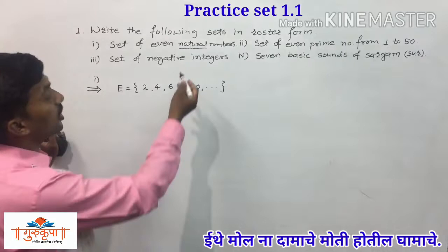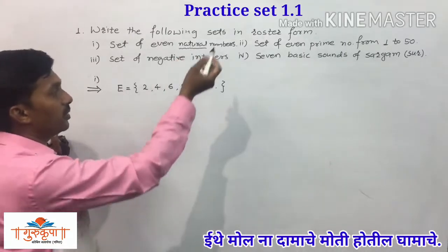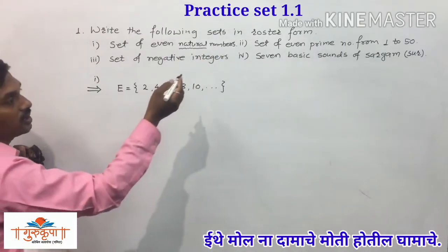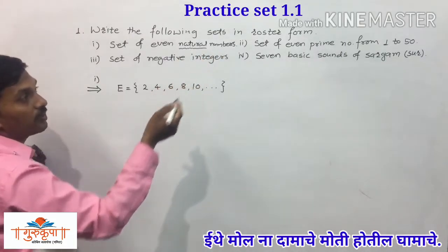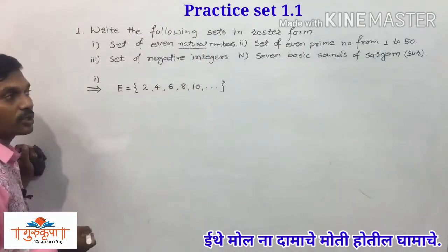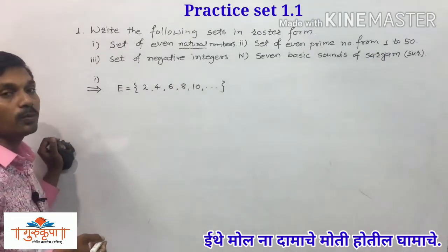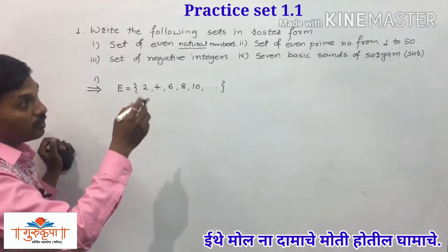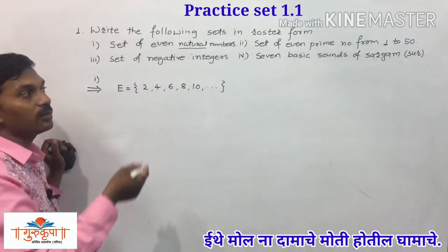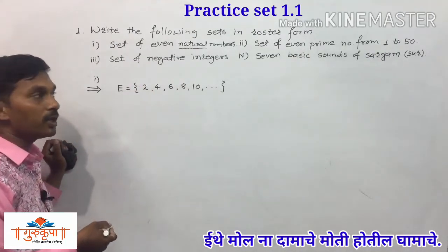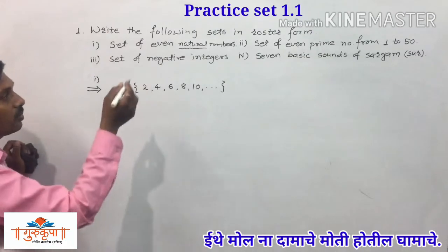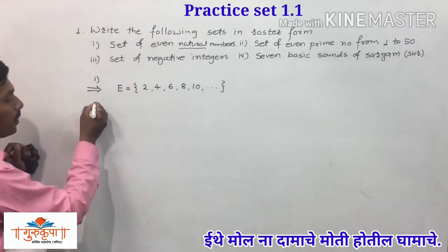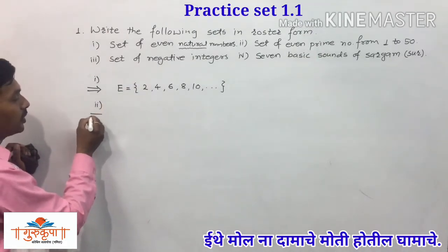The second example is: set of even prime numbers from 1 to 50. We have to write the set of even prime numbers from 1 to 50.